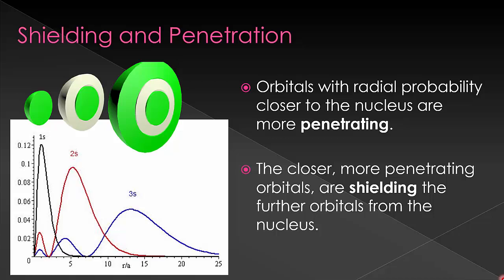Here in this graph I have the radial probability graphs of the first three s orbitals. This shows the distance from the nuclei that the electrons in the orbital are located. You can see that the higher the energy, the further away most of the electron density is. For instance, the 3s orbital has most of its density much further away than the 1s orbital, which is much closer to the nuclei. This shows us that lower energy levels are what we would call more penetrating, or they are closer to the nucleus.